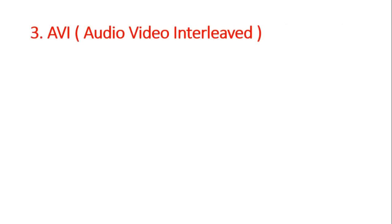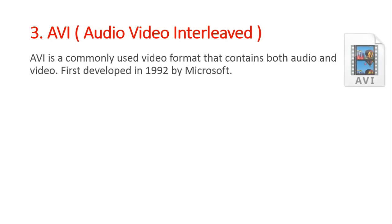Next is AVI — Audio Video Interleaved. AVI is a commonly used file format that contains both audio and video. This video file format was developed by Microsoft in 1992.